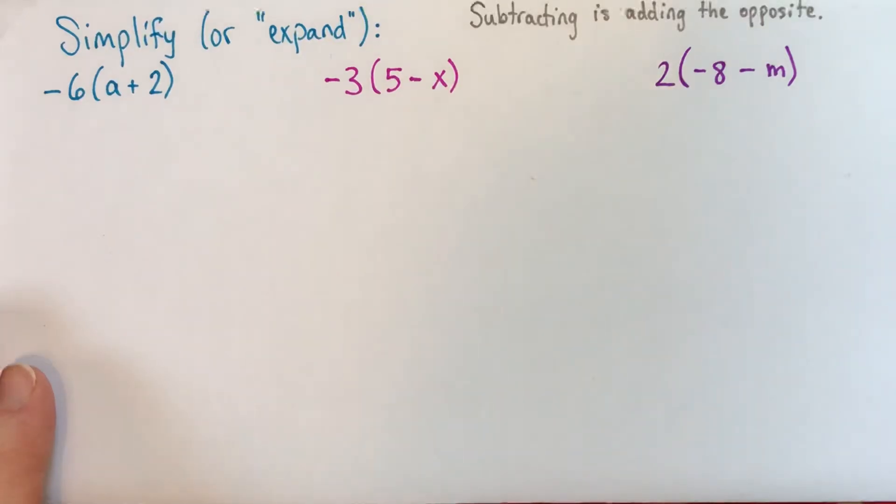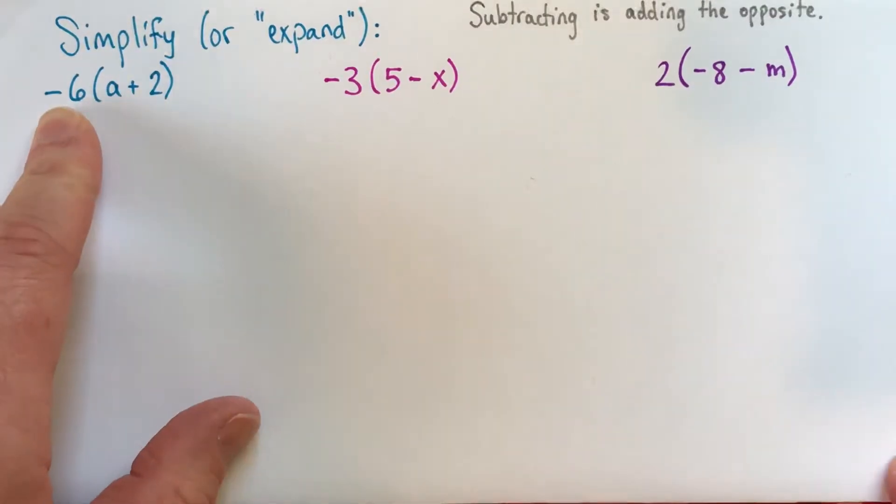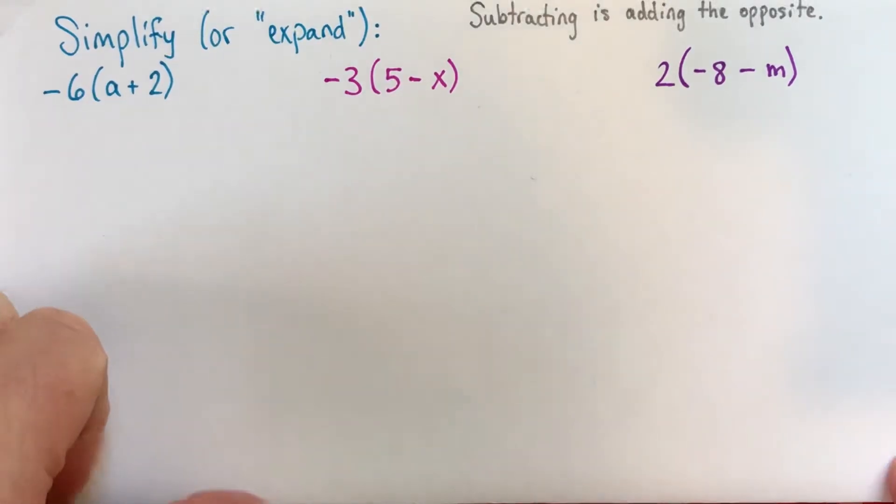So in a previous video, I did a bunch of distributive property questions with algebra tiles, which I think is a really nice visual for understanding what's happening. But I find that if we're multiplying a binomial by a negative number, the algebra tiles cause more of a headache than they are a help. So I don't really necessarily use them if I'm multiplying a binomial by a negative. Alright, let's get started here.